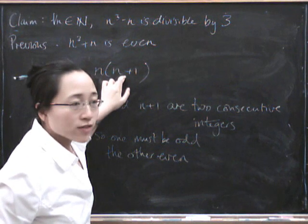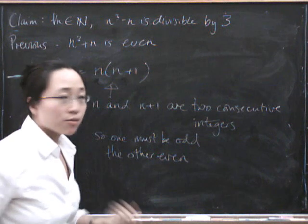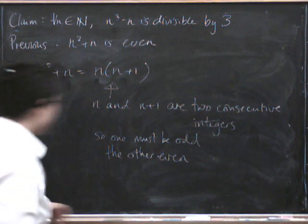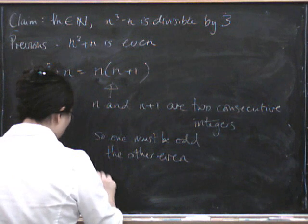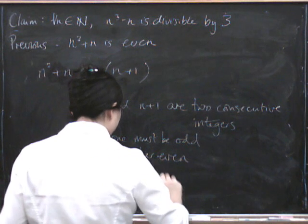If this one is odd, that one's even. And if this one is even, that one's odd. But in either case, when you multiply them together, you get something even. So the product is definitely even.